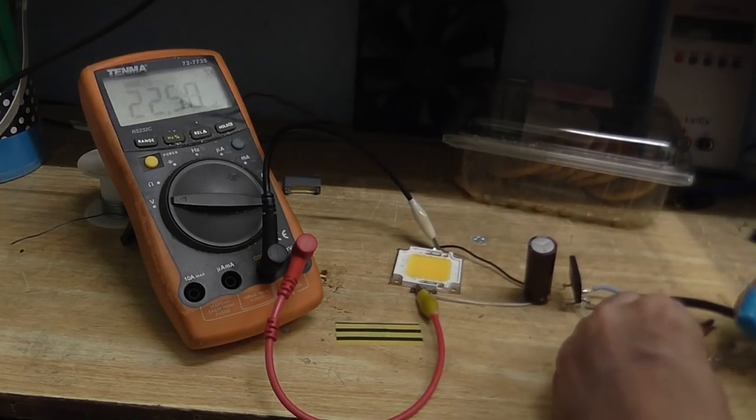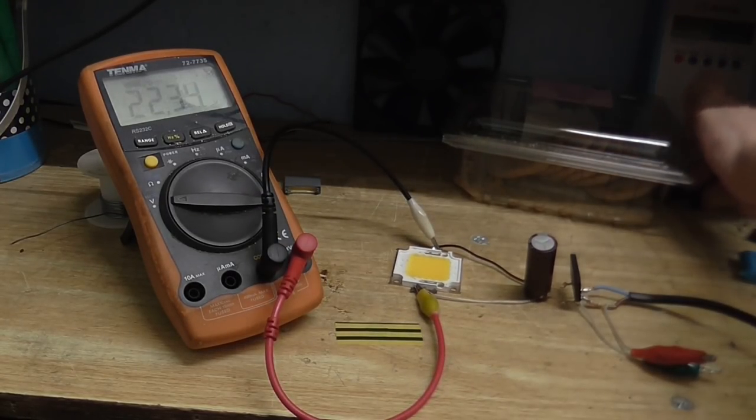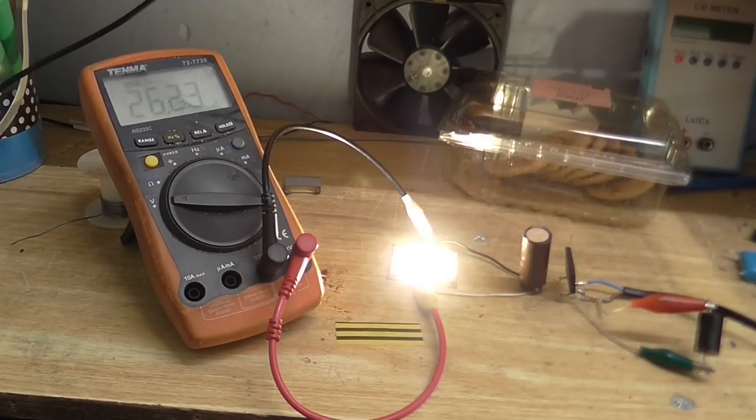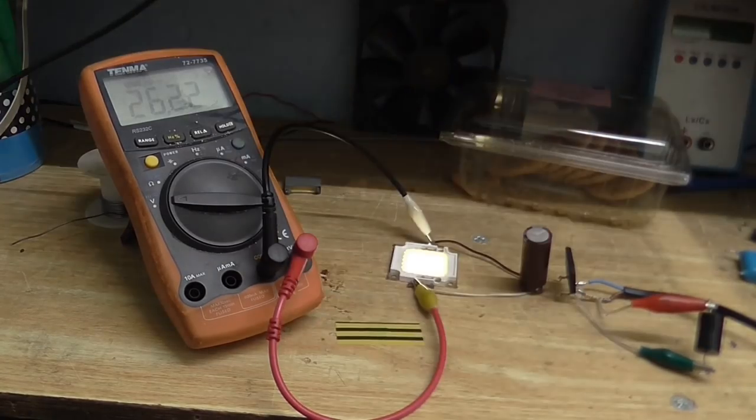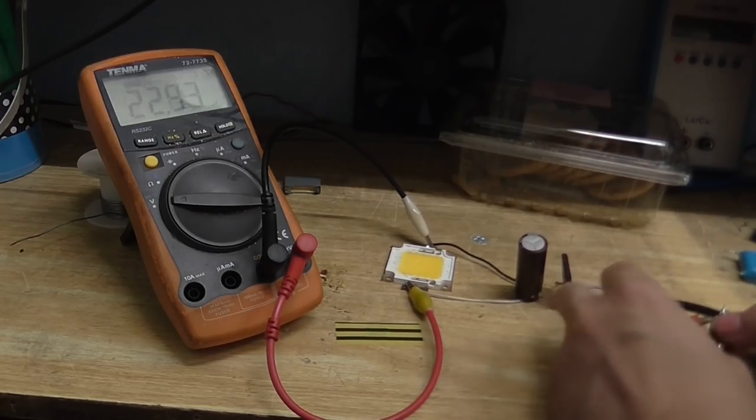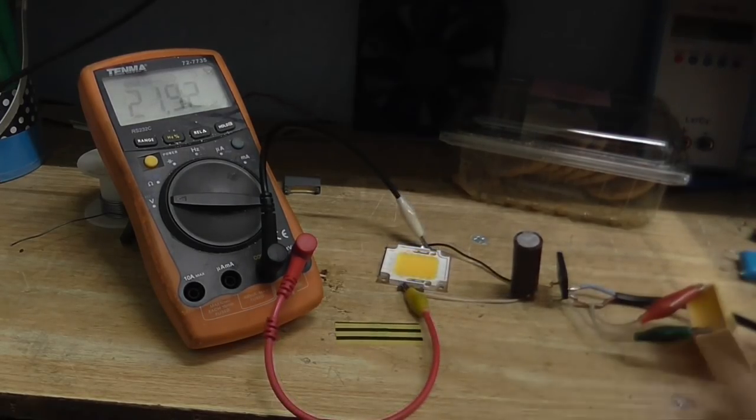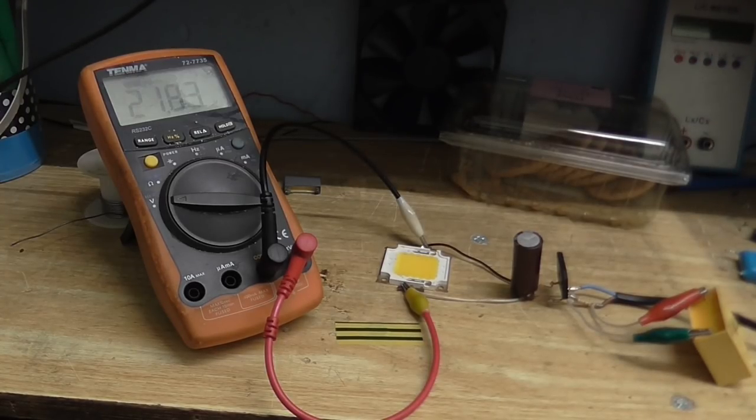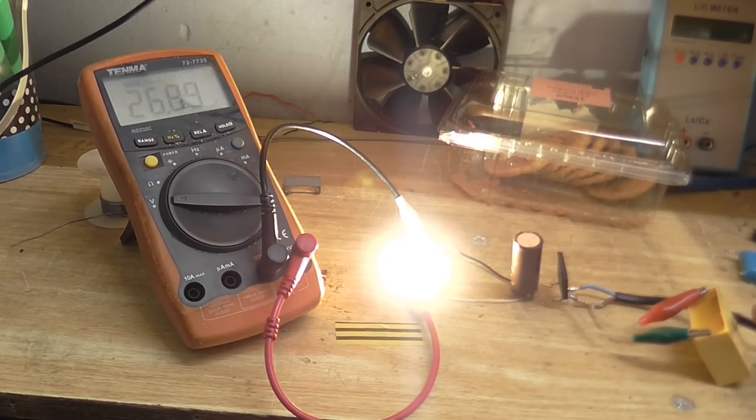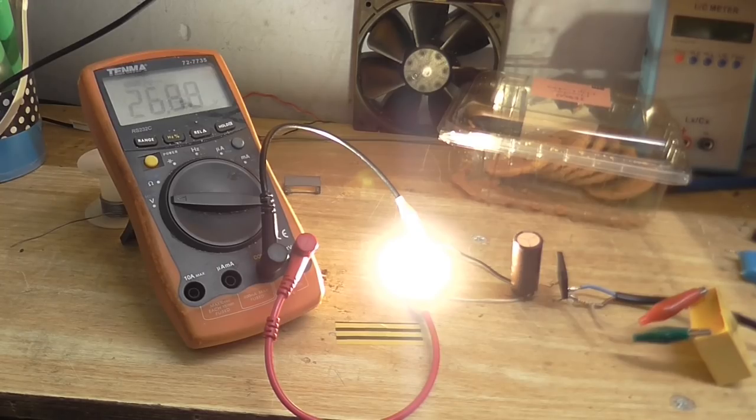And lastly, I will try with the 1 microfarad. Hopefully nothing will blow up. 26. And oh, what the hell, let's try it with the 2.2. About 27 volts. So, yeah. So, I think this 2.2 microfarad voltage drop capacitor is just what we need.